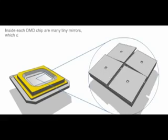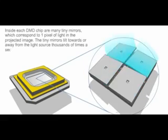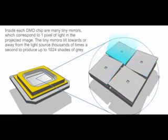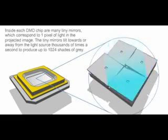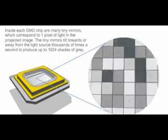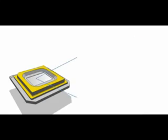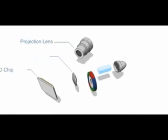Inside each DMD chip are many tiny mirrors which correspond to one pixel of light in the projected image. The tiny mirrors tilt towards or away from the light source thousands of times a second to produce up to 1,024 shades of grey.